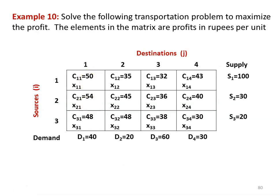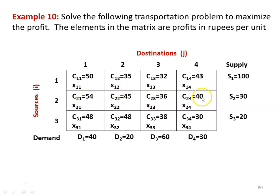We have to convert the problem into a minimization type of problem. To do so, we identify the maximum cell value among the 12 cell values, which is 54. Then we subtract all other cell values from this maximum: 54 minus 50, 54 minus 35, 54 minus 32, 54 minus 43, 54 minus 54, 54 minus 45, 54 minus 36, 54 minus 40, 54 minus 48, 54 minus 48, 54 minus 38, and 54 minus 30. After subtracting, the problem becomes a minimization type of problem.